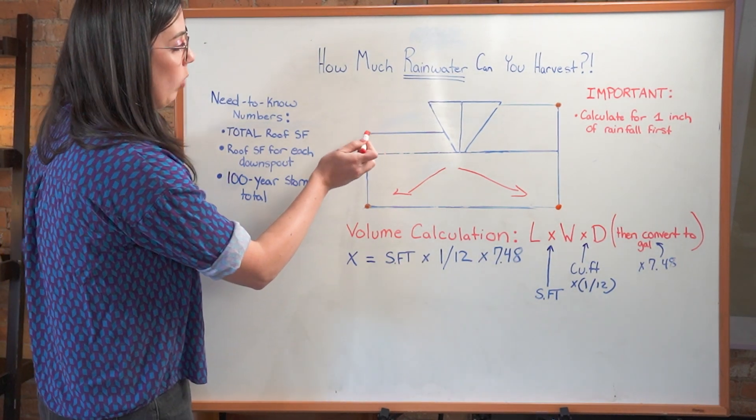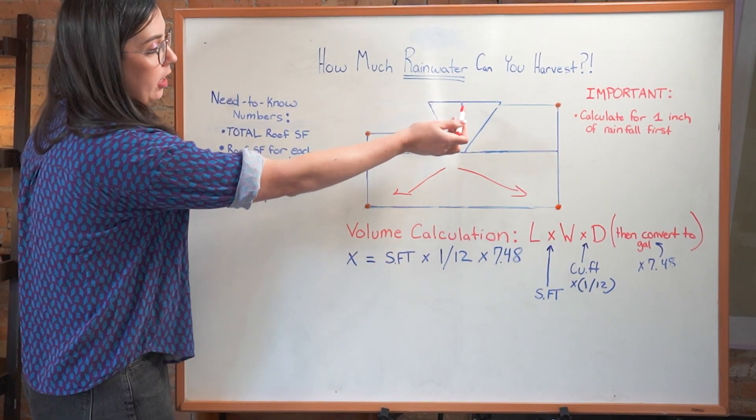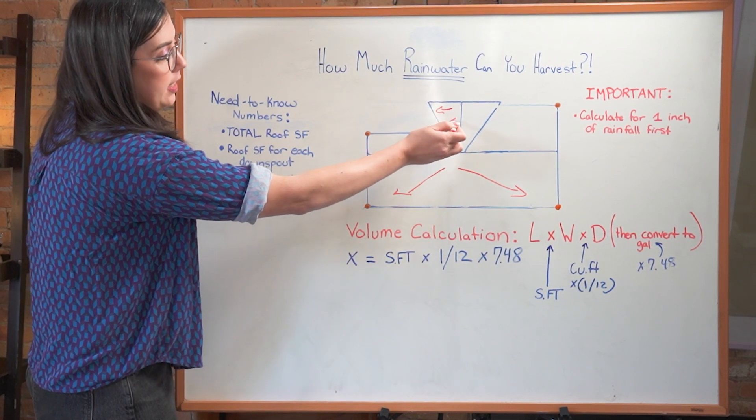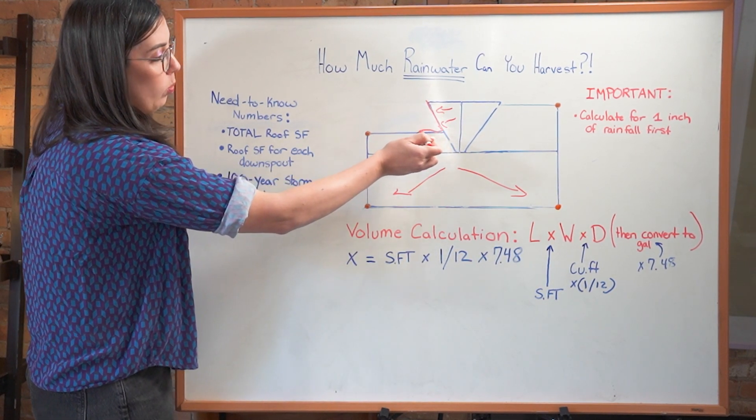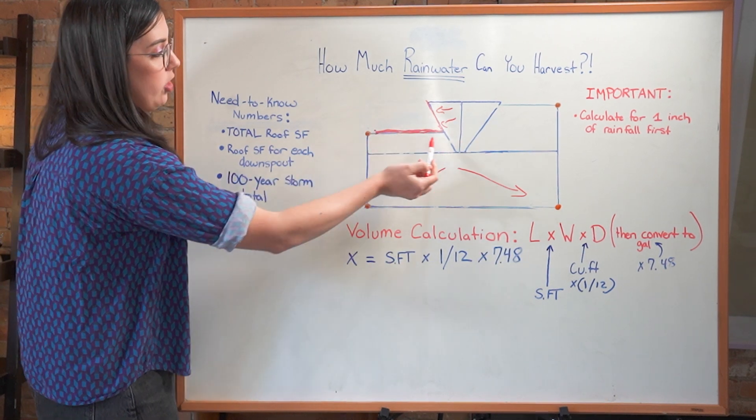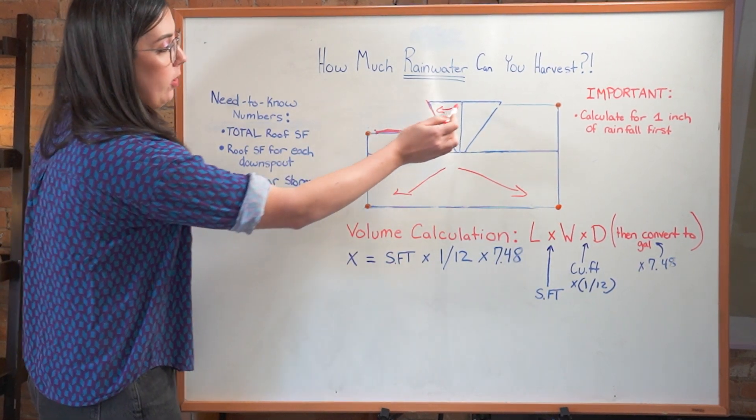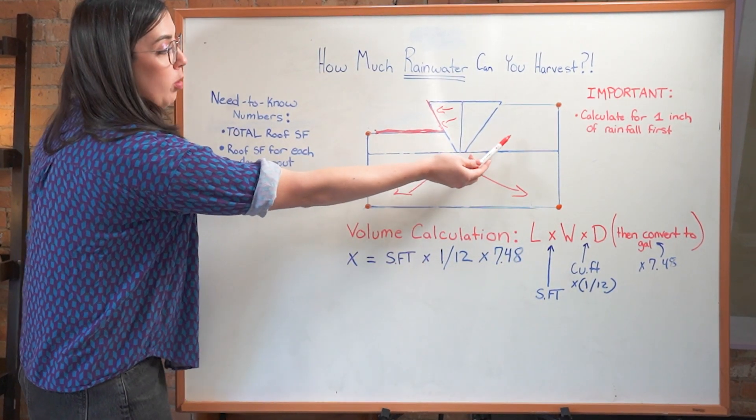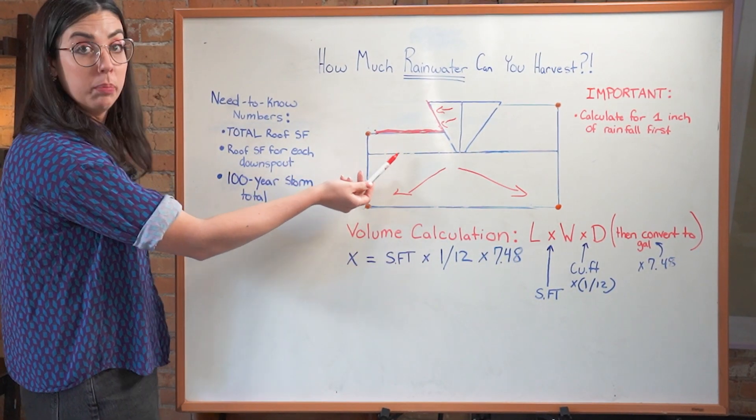It might get a little more complicated if you don't have a simple rectangle as a roof. For example, there's only one downspout here and no downspout here. If you think of this like a dormer with a ridge line, all of this water is likely being collected on a gutter that is then going around this corner and going to this downspout. So this is the square footage you're calculating for this downspout versus this one. In this case, this number is going to be higher than this number.